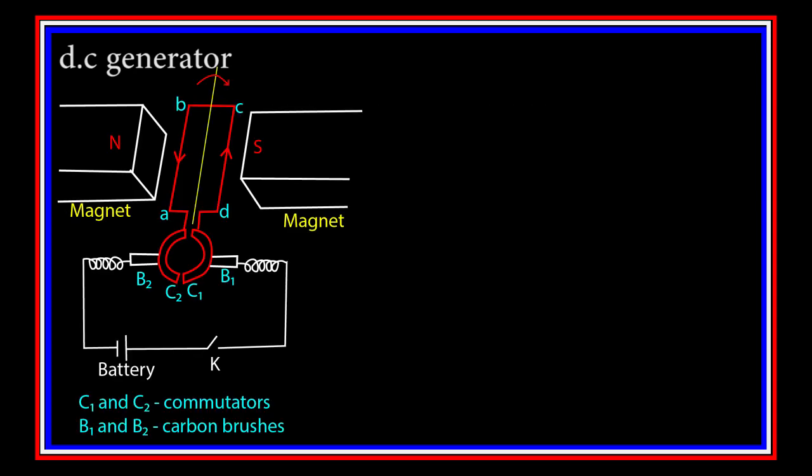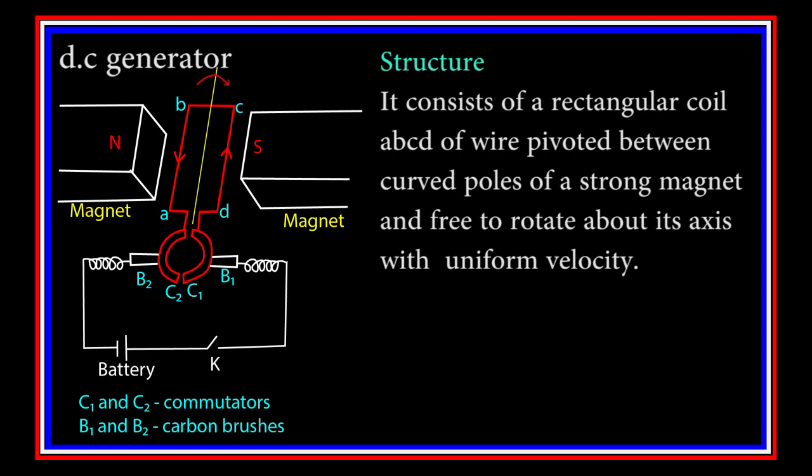The structure of a DC motor is shown below. It consists of a rectangular coil, ABCD, of wire,